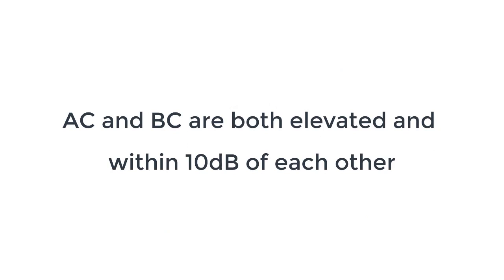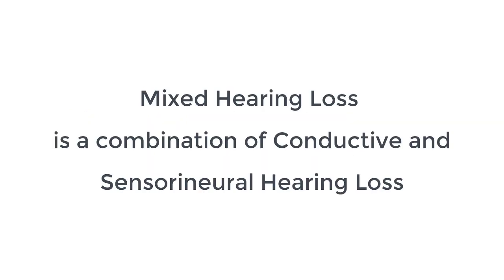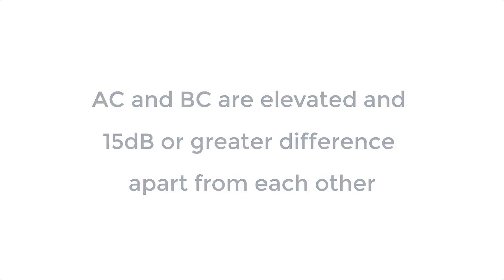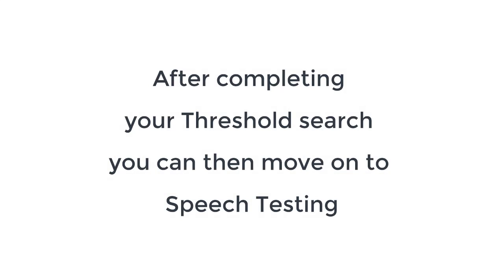Sensorineural hearing loss is when air conduction and bone conduction are both elevated and within 10 decibels of each other. A mixed hearing loss is a combination of conductive and sensorineural hearing loss — it is when air conduction and bone conduction are elevated and there's a 15 decibel or greater difference apart from each other. After completing your threshold search, you can then move on to speech testing.